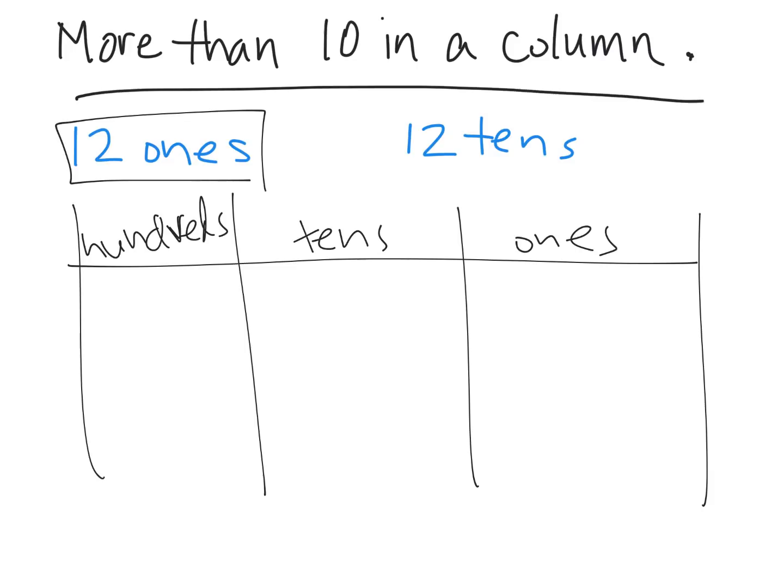Now we're going to model this. Since it says 12 ones, I'll model this in red. So 12 ones means we're going to have one, two, three, four, five, six, seven, eight, nine, ten, eleven, twelve ones. We remember that any time you have ten in a column, that means you can group those ten together and you can bundle them up, like with rubber bands and popsicle sticks.